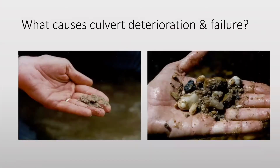So what causes culvert deterioration and failure? There are several factors that can lead to culvert deterioration. The first one we'll cover is scour. Scour is created from soil conditions and common sediments that, when carried through the culvert, act as an abrasive to the bottom invert of the pipe. If this goes unchecked, it can create major problems for that pipe material.